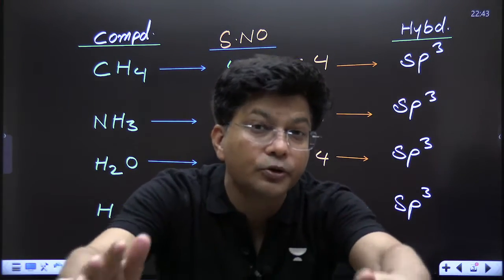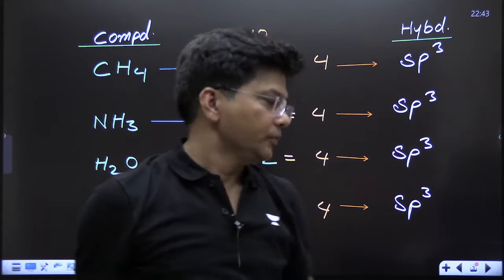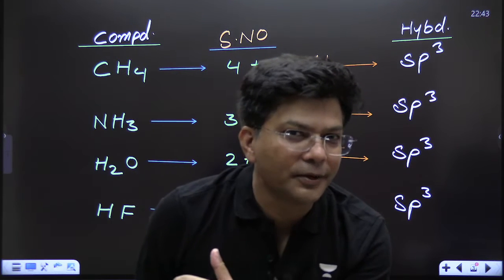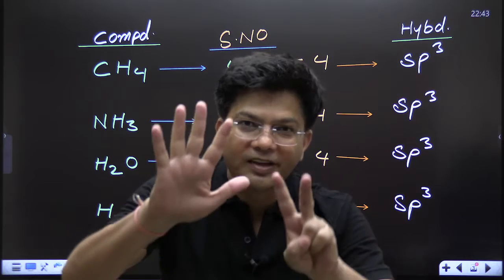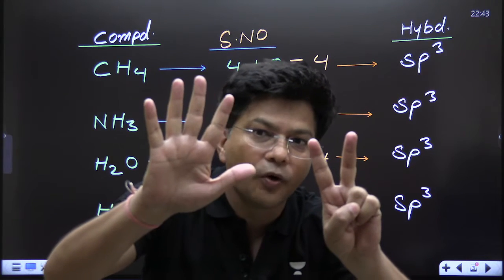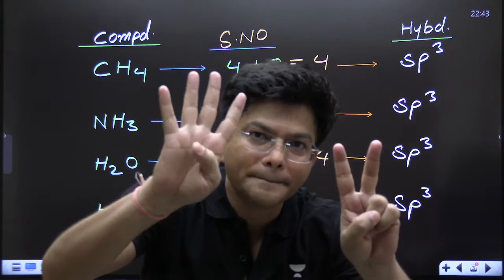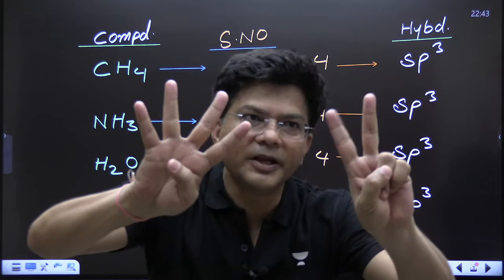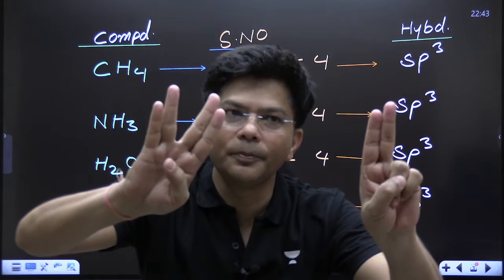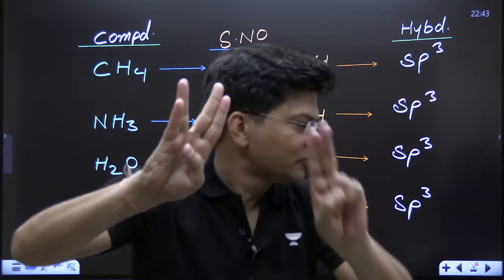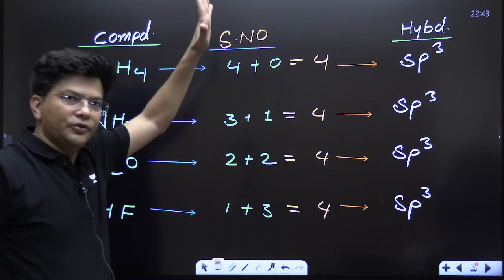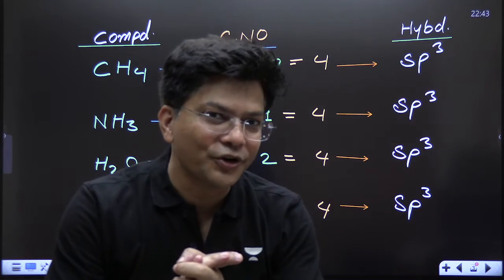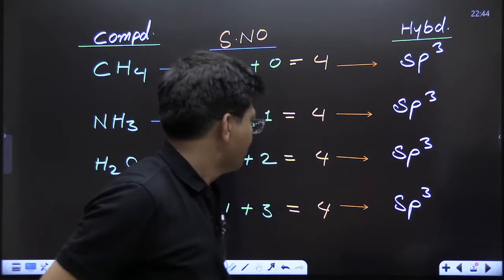Now halogens — fluorine, chlorine, bromine, iodine, astatine — 'first class bro and I.' Fluorine has seven electrons in the outermost orbit and forms only one sigma bond. Seven minus one = six electrons left, meaning three lone pairs. Three lone pairs + one sigma bond = four → sp³ hybridization.